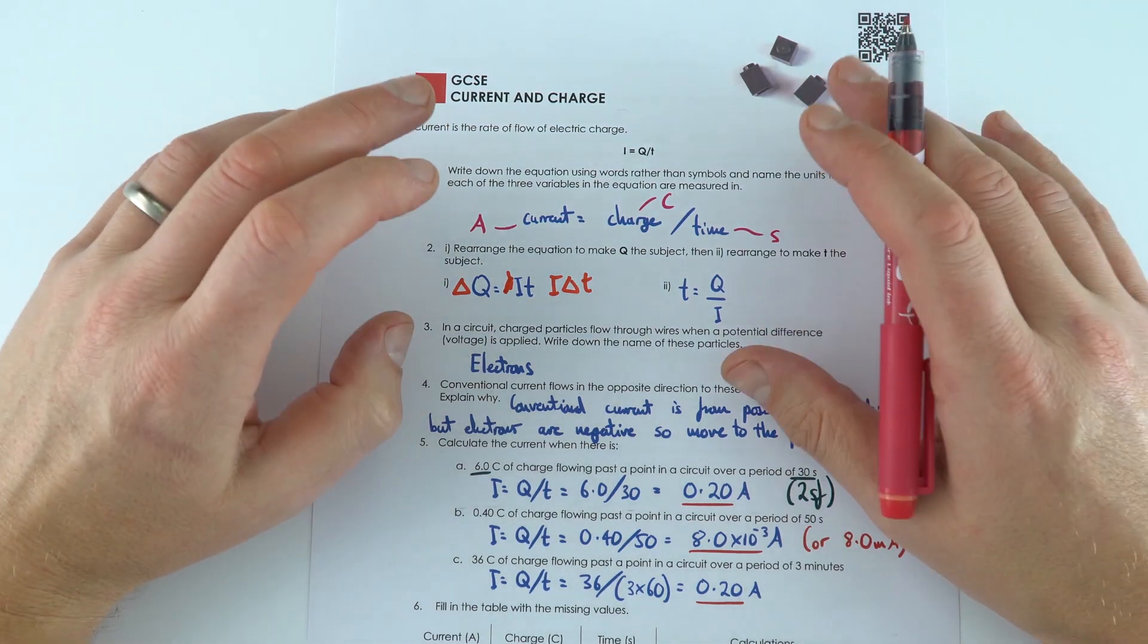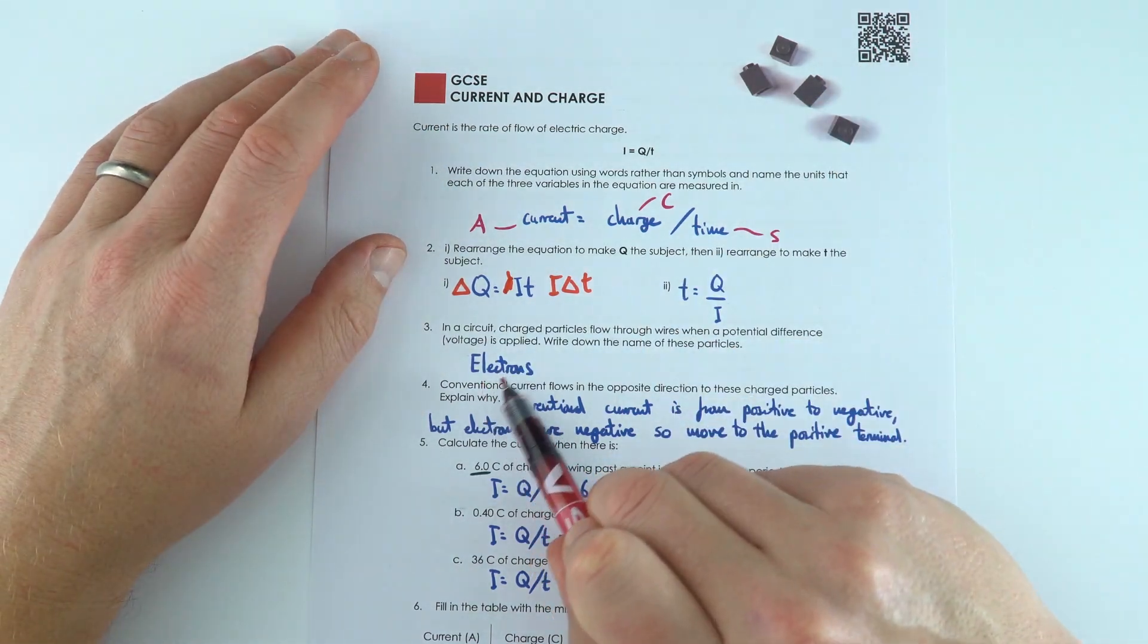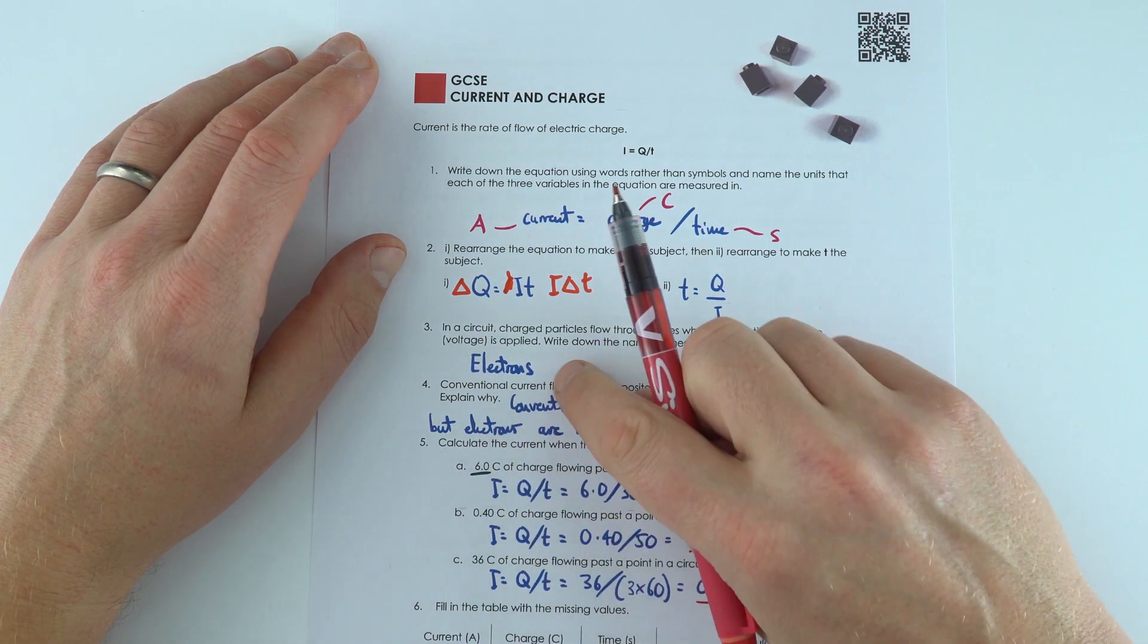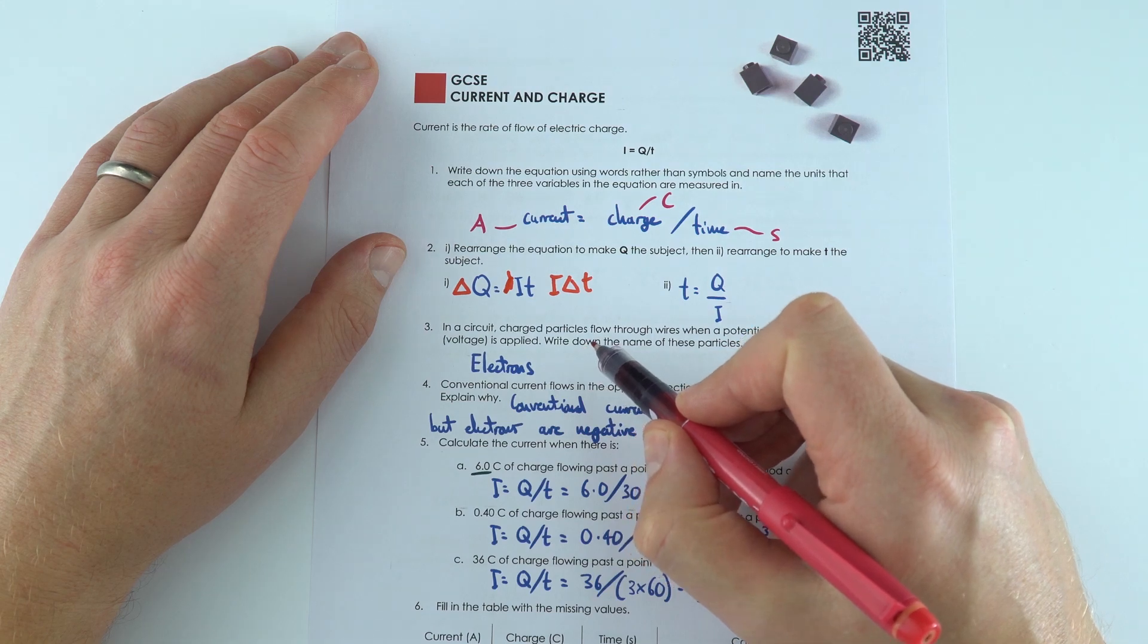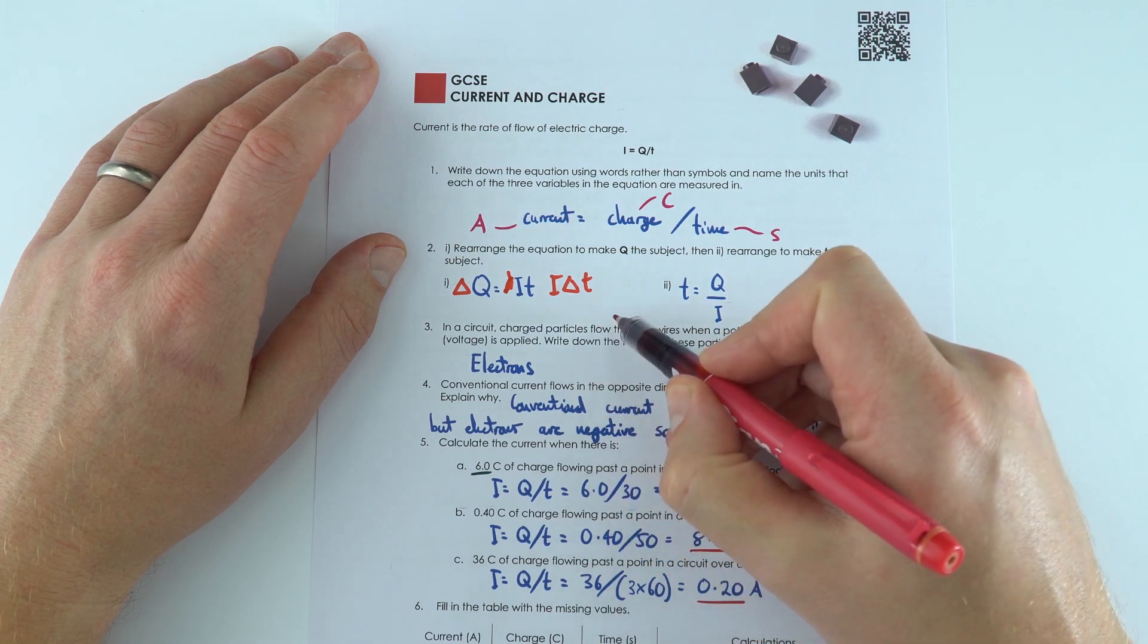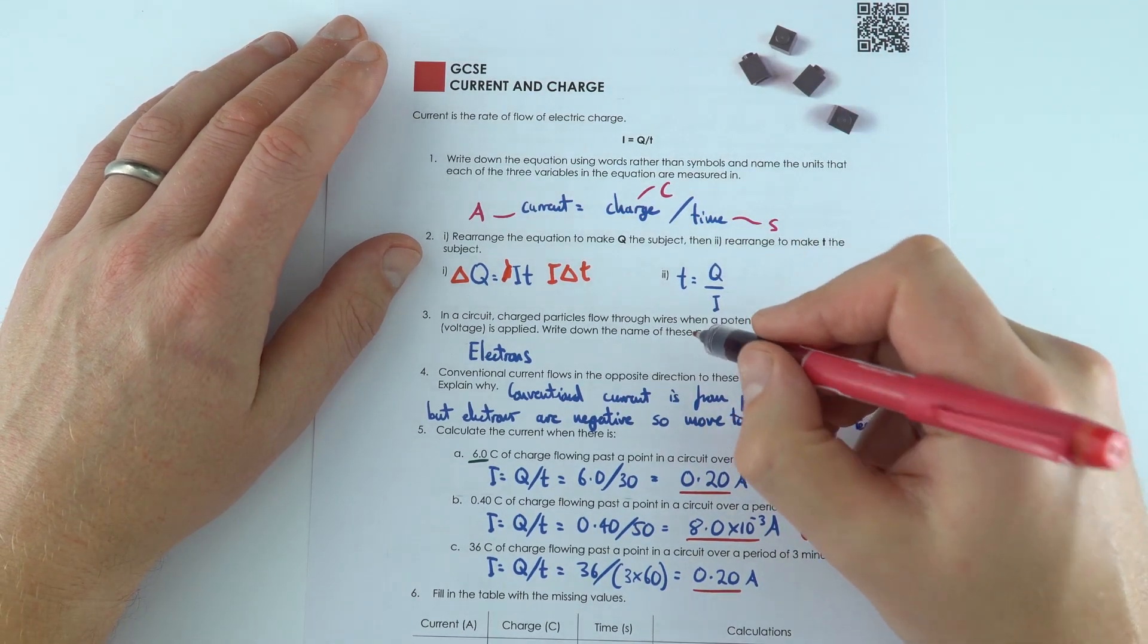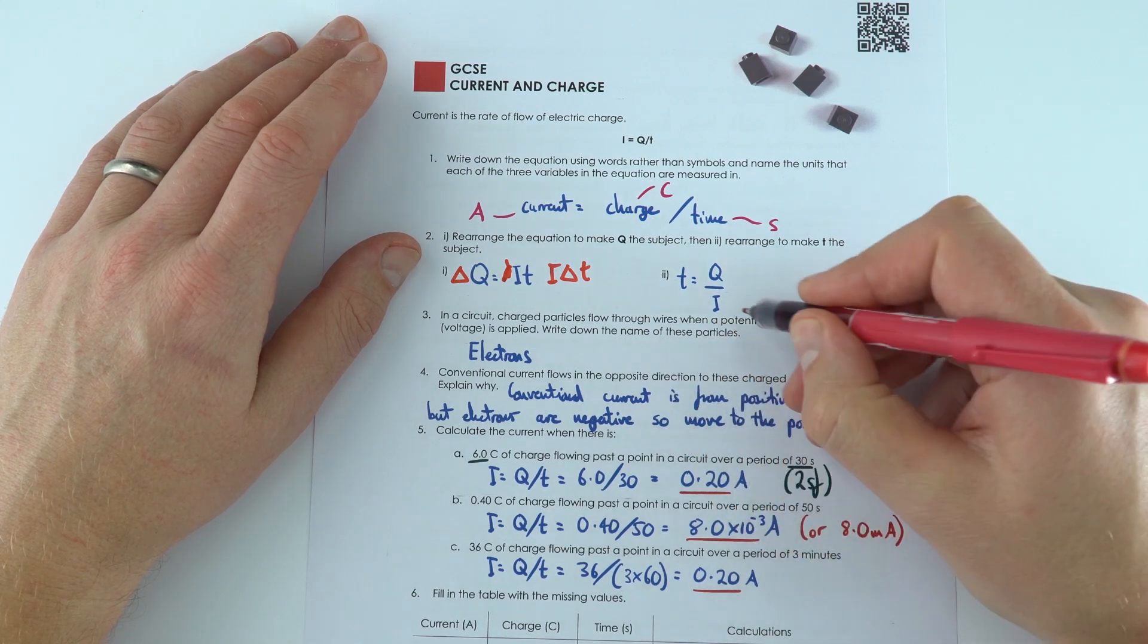When we have a conventional electric circuit, it's the electrons, these negative particles, which are moving round. And because they're negative, the actual electrons go from the negative terminal to the positive terminal. But we say by convention, the conventional current goes from positive to negative.